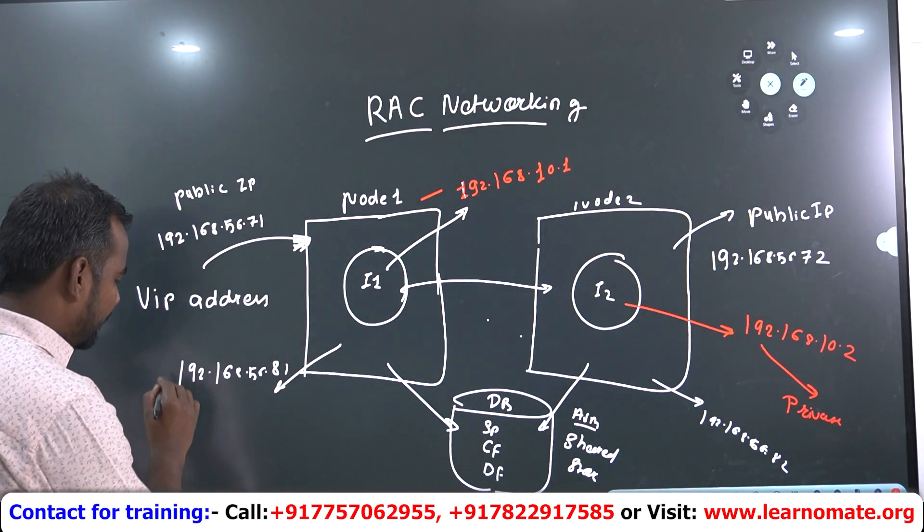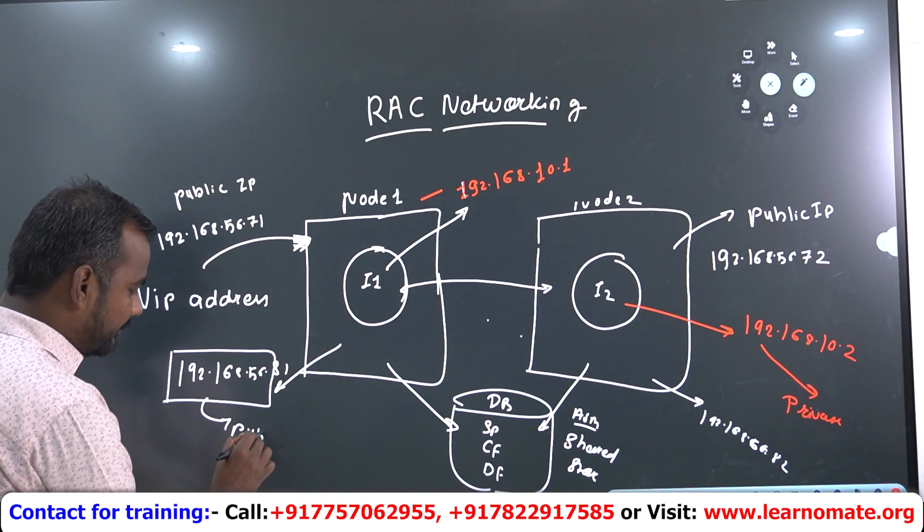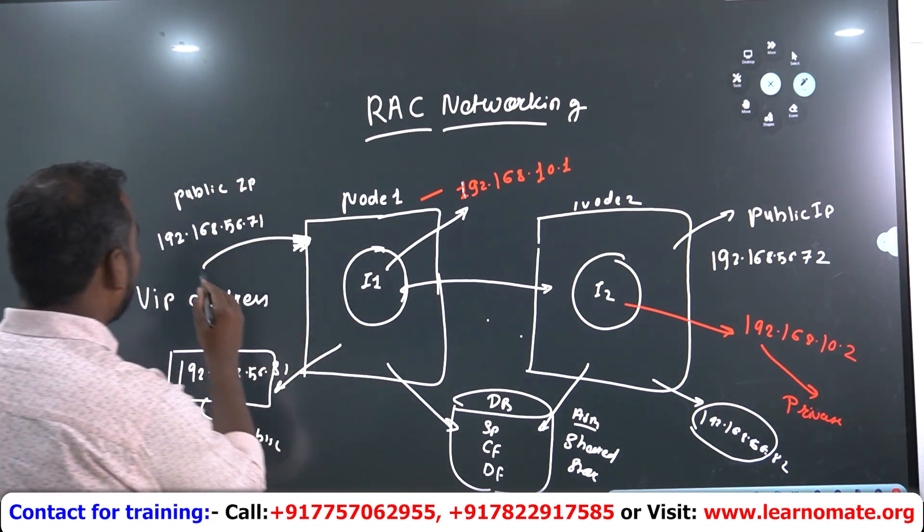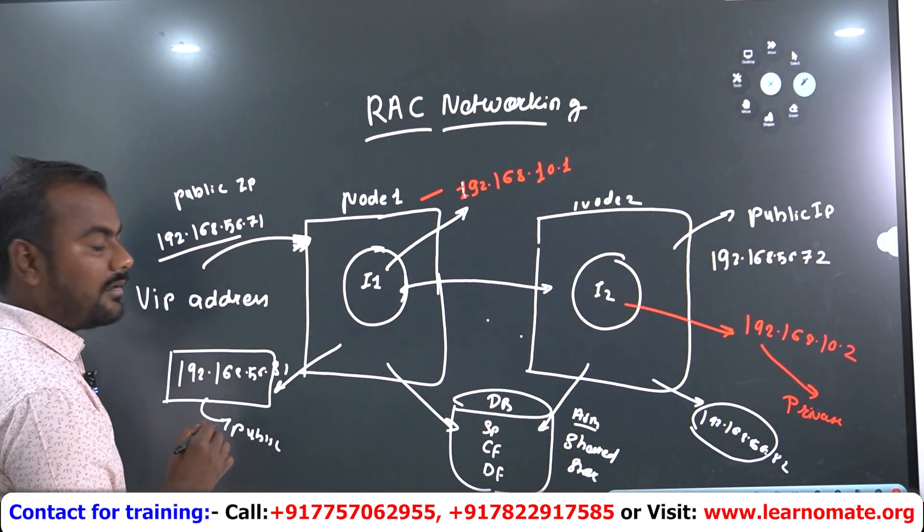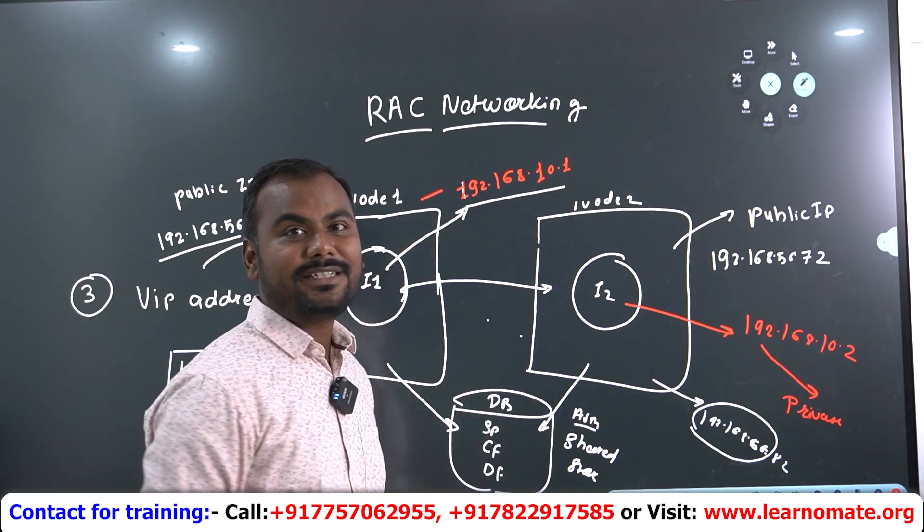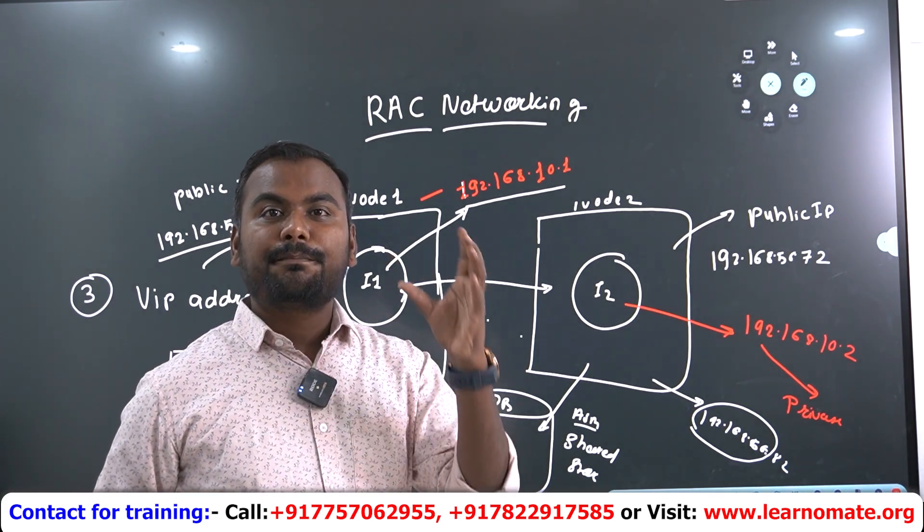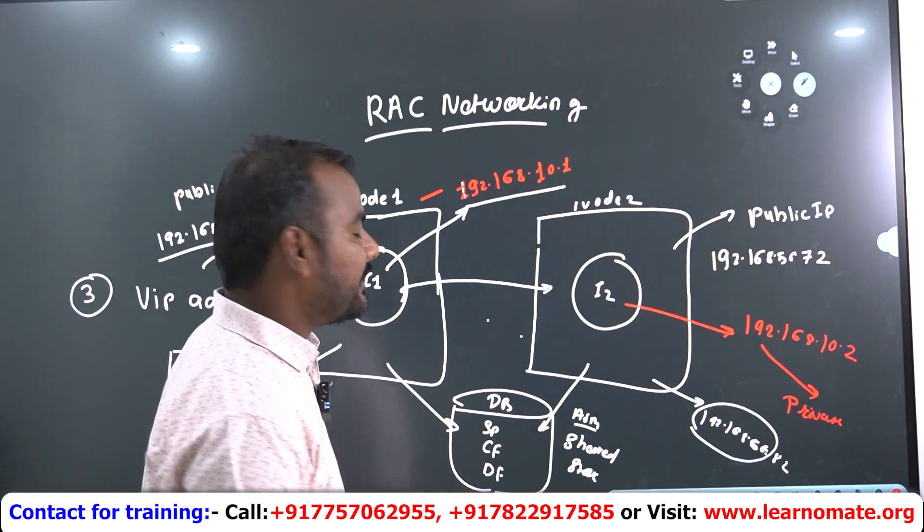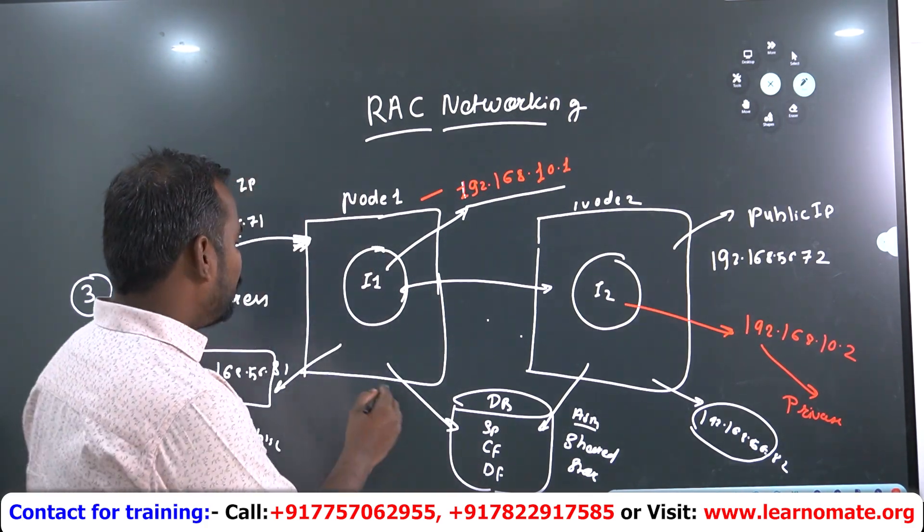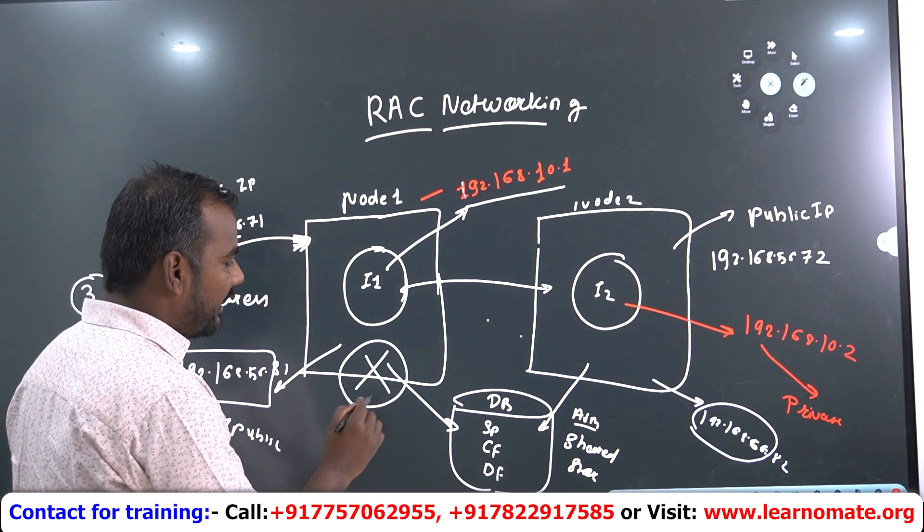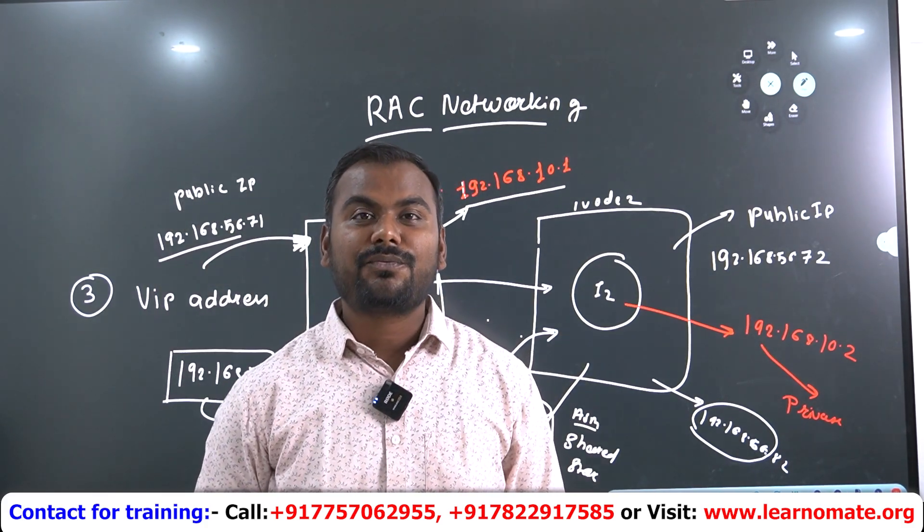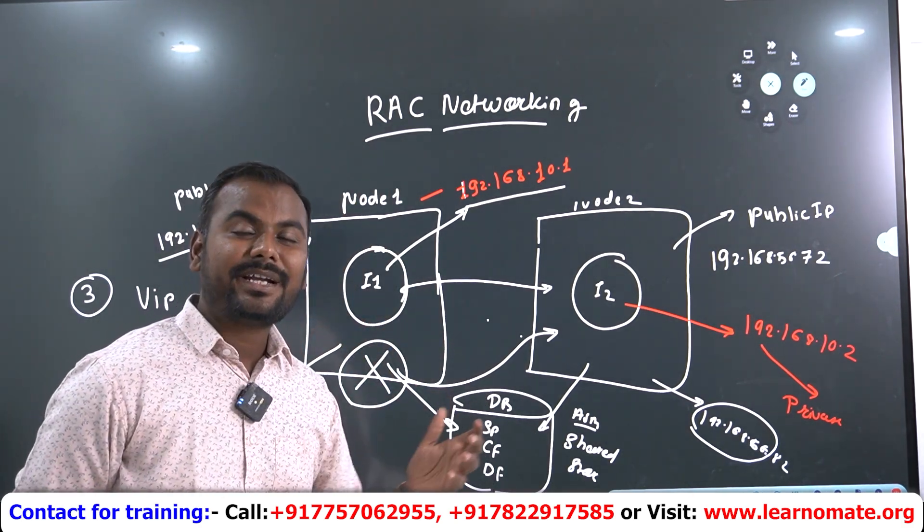So you can see here that this VIP is also public only. And this VIP is also public because the range, you need to understand the range. For public, I use the range like 192.168.56. But for private, I have used 192.168.10. For VIP also, we are using the public range only. So what is the use of this VIP? VIP is like a virtual IP as everyone knows. If this node goes down by any chance, the VIP address will be shipping from here to here. The VIP will be going to the survival node. This is the importance of VIP address. It will not ask you to wait till TCP timeout.